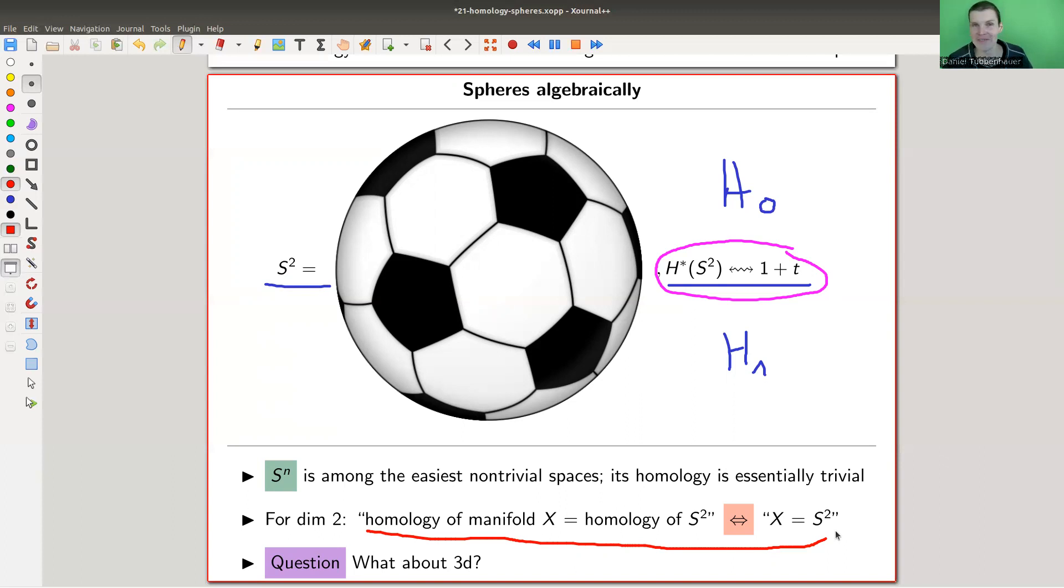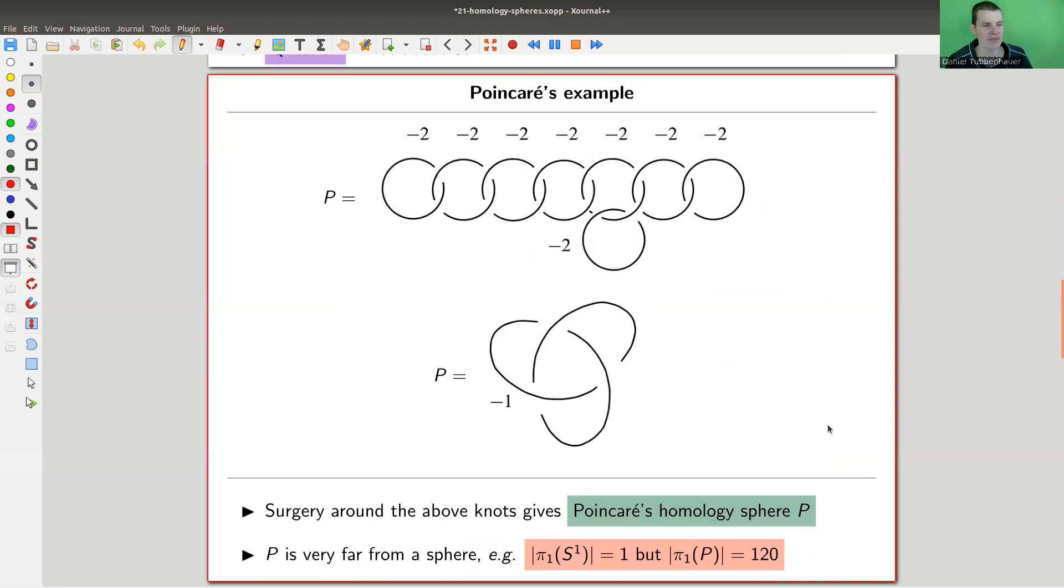And you might wonder whether this is a coincidence or whether this is general. If it would be general, we would have found a different definition of a sphere, which would be pretty amazing. So by the title of this video, and that I'm making this video to begin with, you probably already guessed that this is not true anymore. And it turns out to be just very, very wrong. So in general, you have a lot of objects that have the homology of the sphere. It was an open problem a long time ago, but it was an open problem at one point. And Poincaré solved it by finding what is called Poincaré's homology sphere.